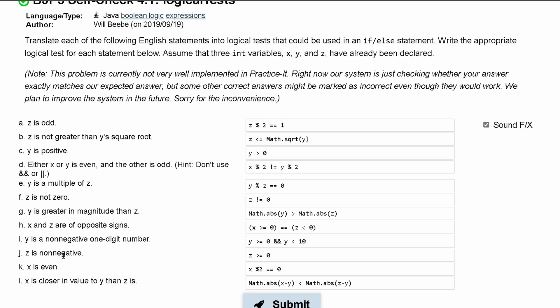We'll come back to this one. y is a non-negative one-digit number. Well, if it's one digit, it has to be less than 10. And since it's positive, it's non-negative. It has to be greater than or equal to 0. z is non-negative. z just has to be greater than or equal to 0. Or z is greater than negative 1.